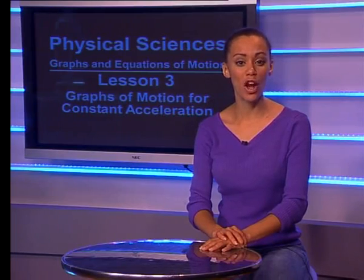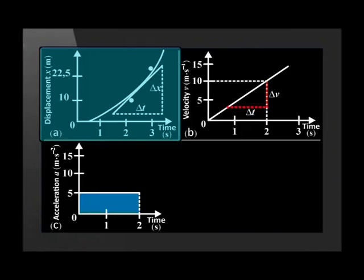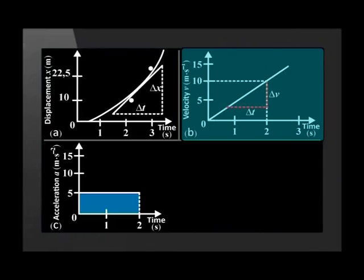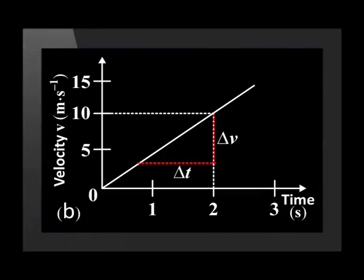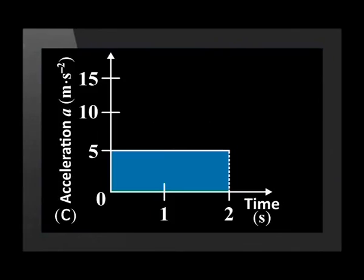So, in this lesson, we learned about constant acceleration, how the data can be represented graphically, and how these graphs can be used to do various calculations. To summarize, look at these three graphs that represent constant acceleration. The displacement-time graph is curved, and the gradient of the tangent to the graph at a specific point gives us the instantaneous velocity at that point in time. The velocity-time graph for constant acceleration is a straight line graph. We use the area under the graph to calculate the displacement at a specific point in time, and the gradient of the graph to calculate the acceleration. Finally, the acceleration-time graph for constant acceleration is a straight line horizontal to the x-axis. The area under the graph can be used to calculate the velocity of the object at a certain time.